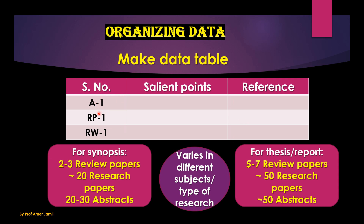The three types of data resources can be categorized as abstracts (A1, A2, A3...), research papers (RP1, RP2...), and review articles. You put salient points and a reference for each source in the table. If you make this data table, more than 50% of your report, synopsis, project, or thesis is already written — that is how important it is.